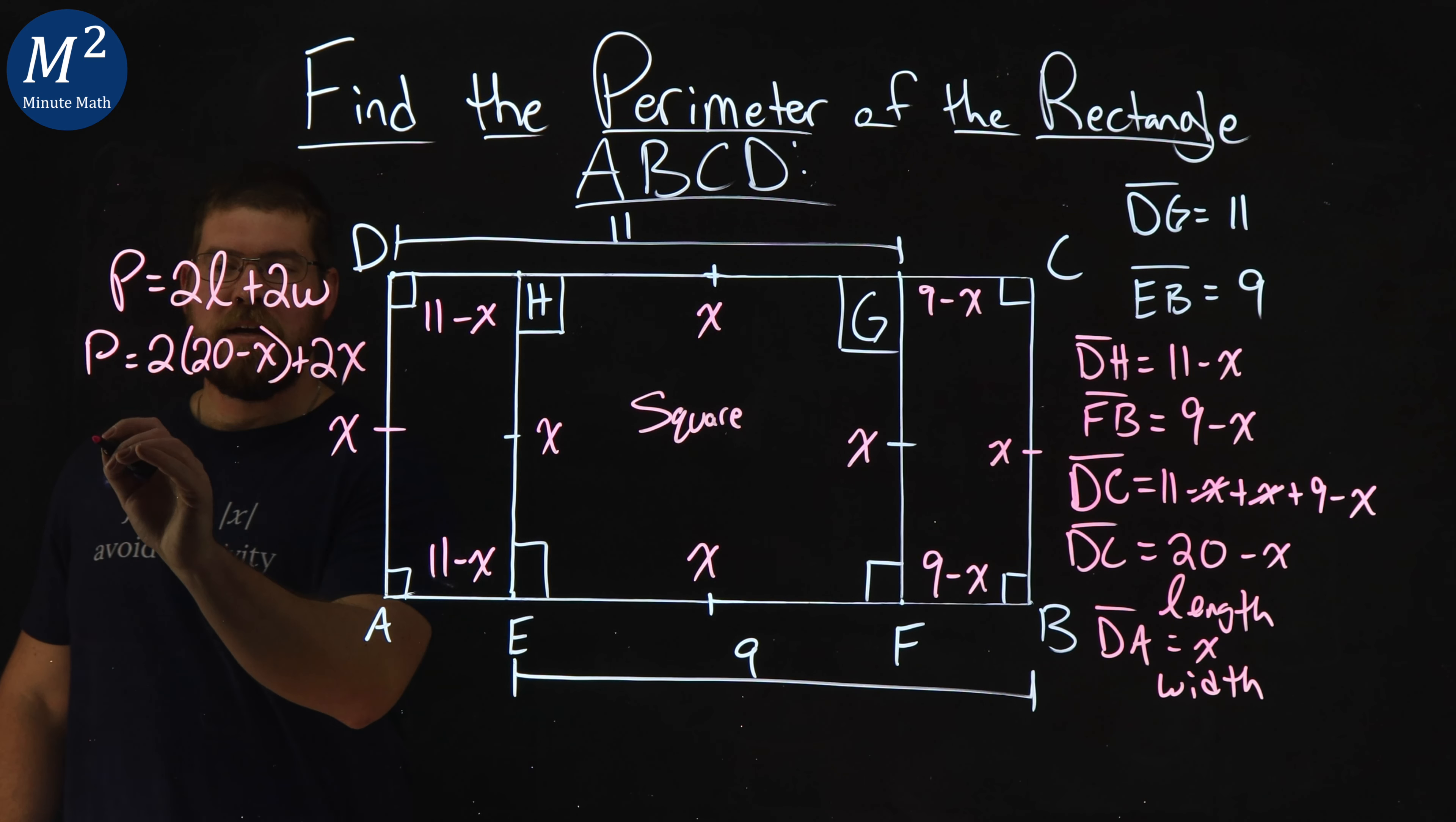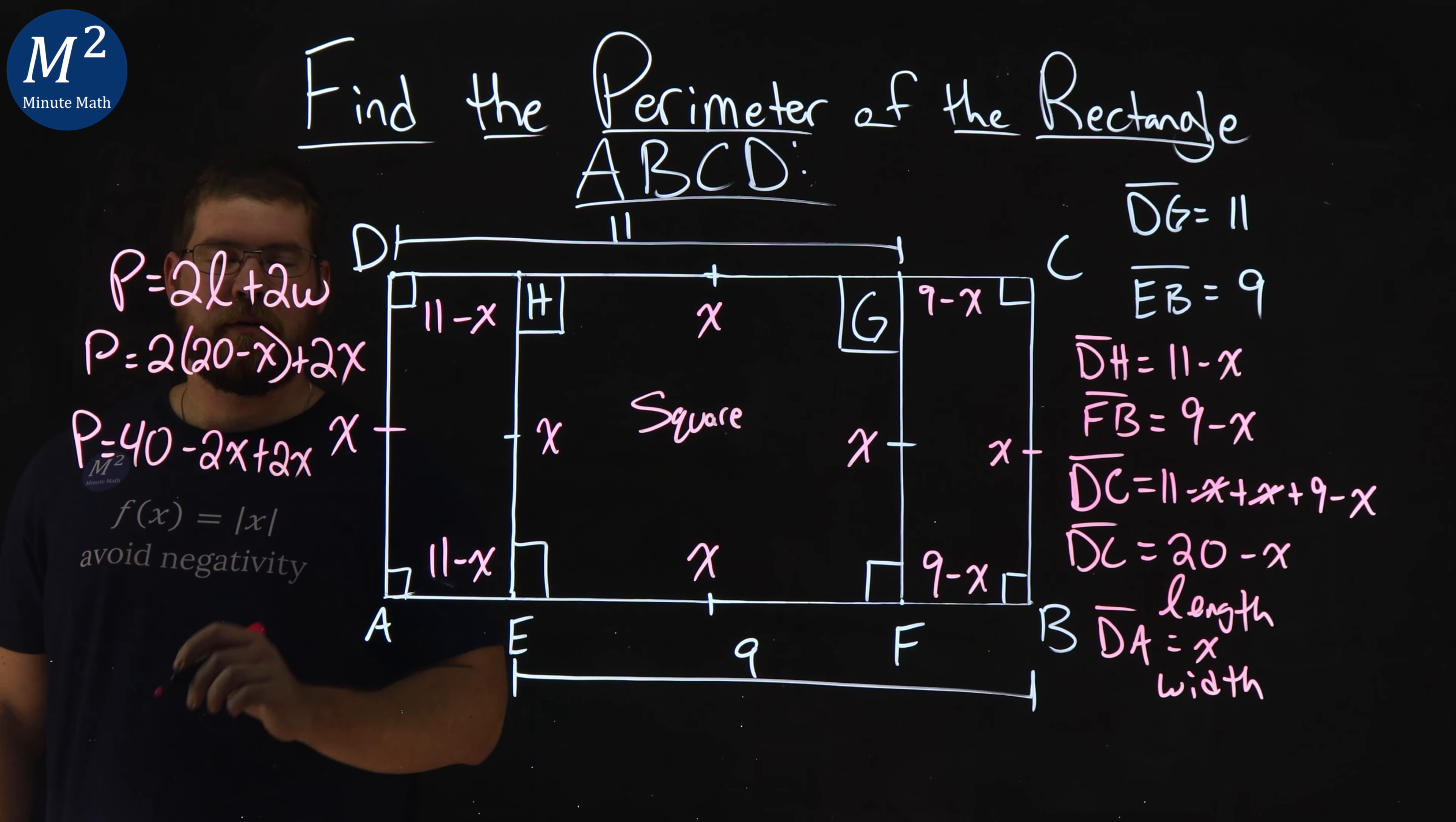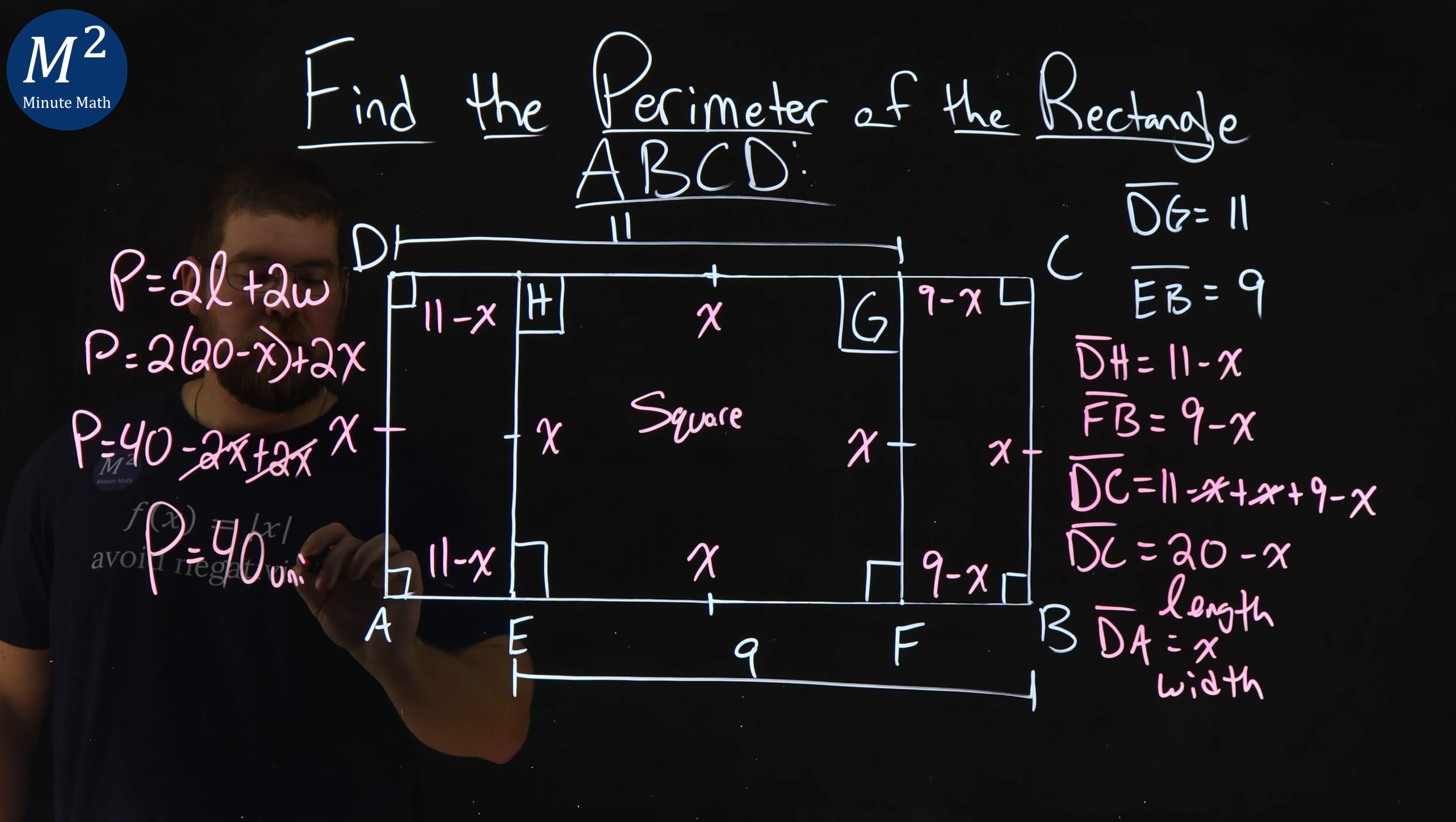I hope I can fit it in here. Simplify that out. 2 across the board, 2 times 20 is 40, minus 2 times X is 2X. So, we subtract that, plus 2X. 2X cancels, lovely, and our perimeter here is 40 units.